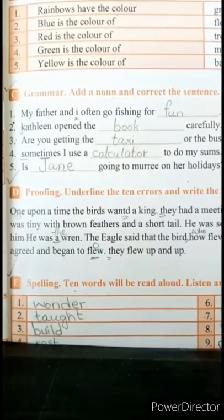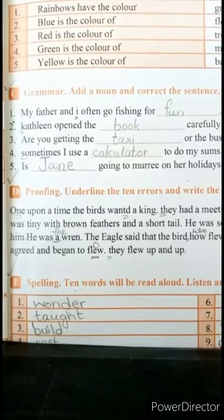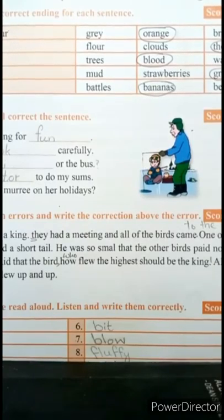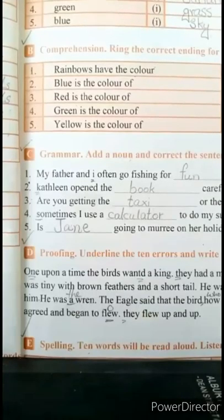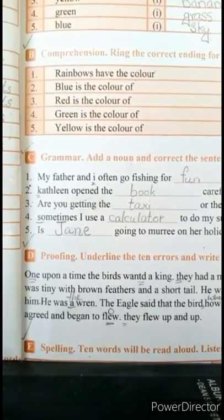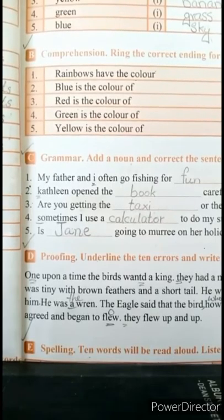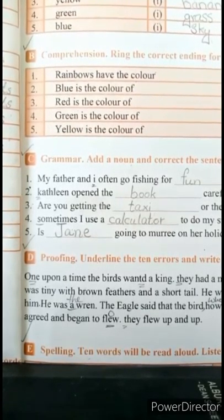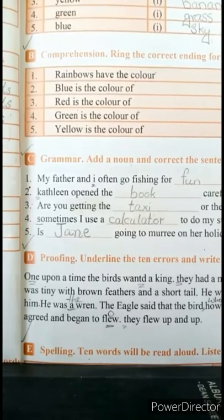Now come towards Exercise D of page 13. This is Proofing — underline the 10 errors and write the correction above the error. یہاں پر آپ کو ایک paragraph دیا گیا ہے لیکن اس میں spelling mistakes ہیں. آپ نے اسکو underline کرکے اوپر صحیح لکھنا ہے.